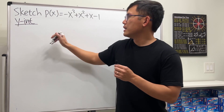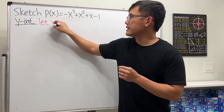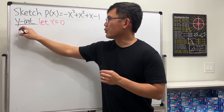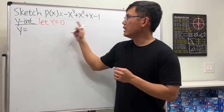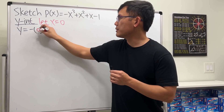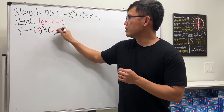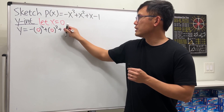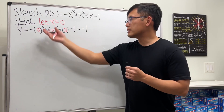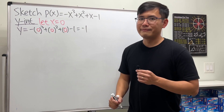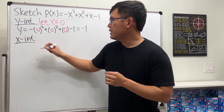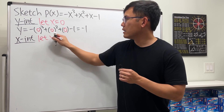Let's do the y-intercept first. For this we'll just let x equal to zero, plug in, and find y. P(x) is y, and we just have y equal to negative 1 — that's negative zero cubed plus zero squared plus zero minus one, which is just negative one. So the y-intercept is (0, -1). Done.